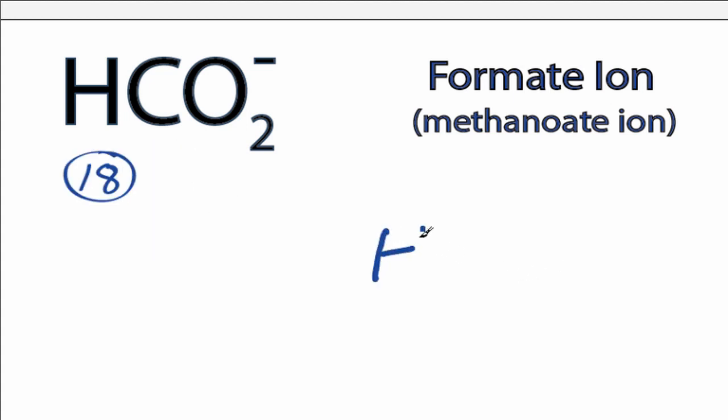Hydrogens always go on the outside on Lewis structures. Carbon is less electronegative than oxygen, so we'll put carbon in the center, and then we'll put the oxygens on the carbon.